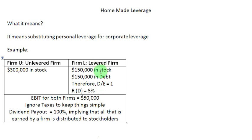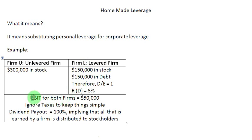Since Firm L has some amount of its value in debt, they are borrowing $150,000, and they would have to pay some interest on this borrowing. The rate of interest is 5% per annum, which is also the cost of debt, Rd. Both Firm U and Firm L are similar in that both make the same amount of money — their EBIT is $50,000.